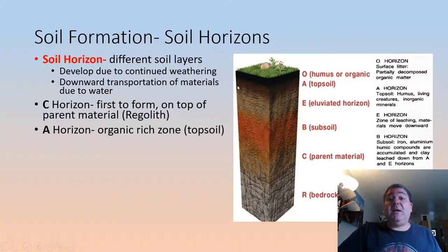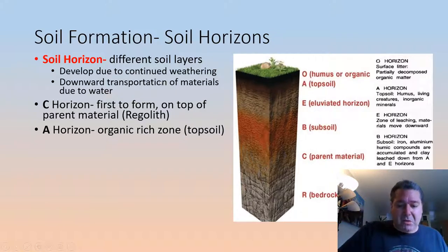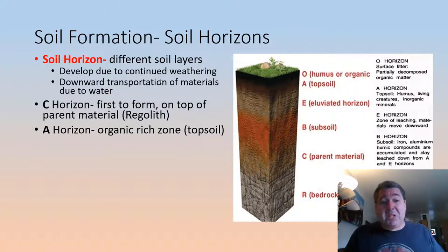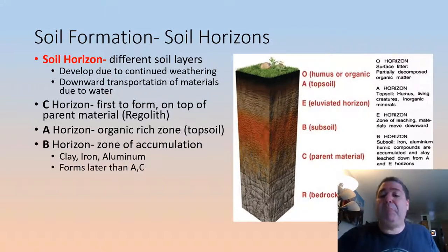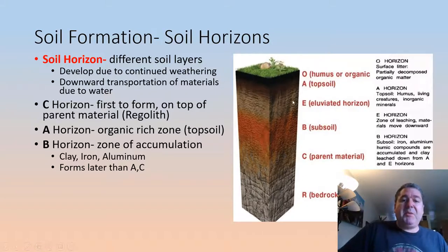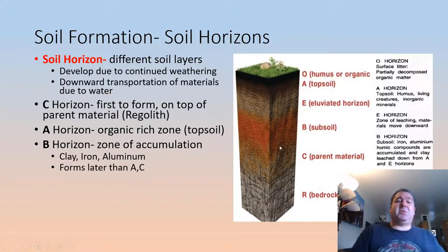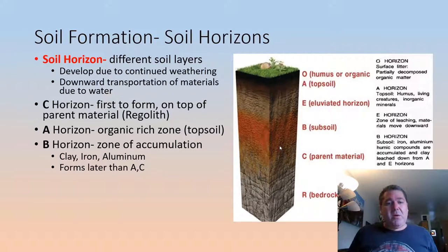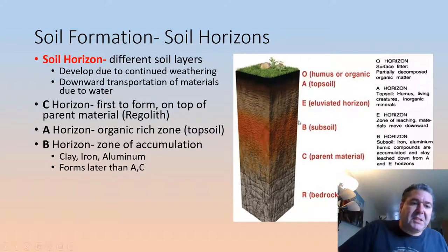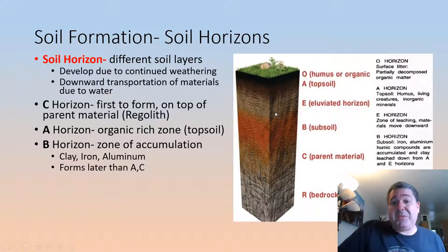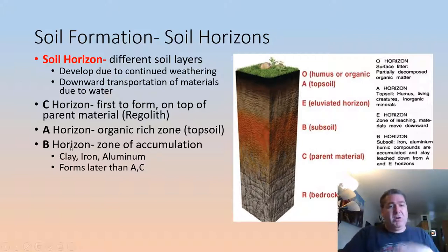The next to form is the A horizon. As this becomes an actual soil capable of supporting plant life, minerals start to break down and release ions, allowing plants to grow. The A horizon, or topsoil horizon, is where things are living and dying — it's a very organic-rich horizon. Then the B horizon forms. This is our zone of accumulation, where clays, iron, aluminum, and quartz concentrate in the subsoil as moisture and gravity bring them down from above. The B horizon forms later than A and C, but over long periods of accumulation we can mine it for aluminum and iron.